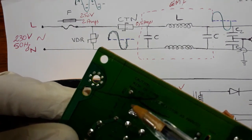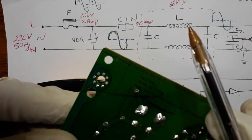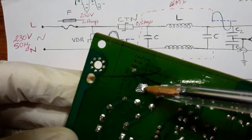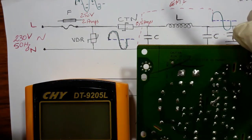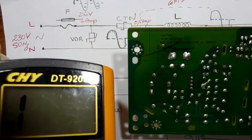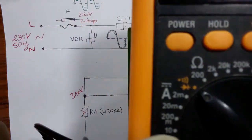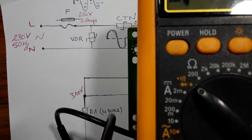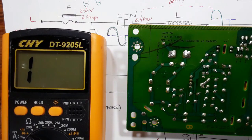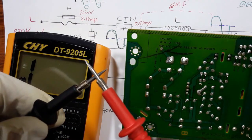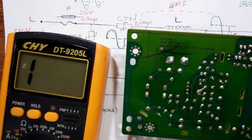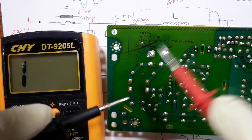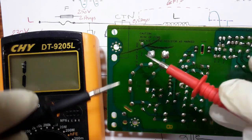These two terminals are the terminals for the fuse. This is the fuse — this is neutral and this is line. To check it using the multimeter, we'll put the multimeter in the buzzer option — the continuity mode. Let's check: this is the neutral and this is the line, and this is the fuse.